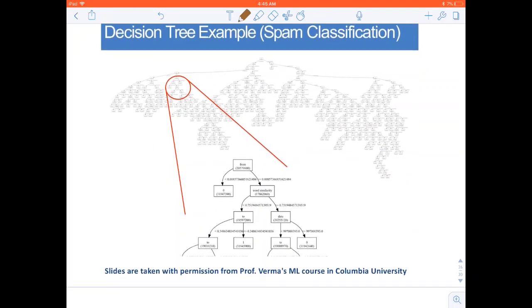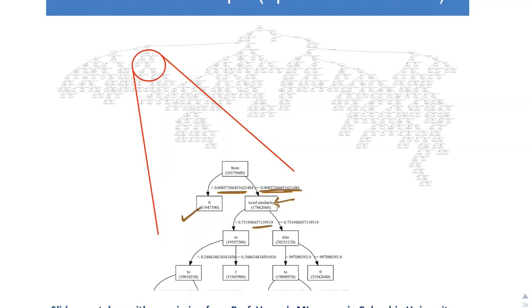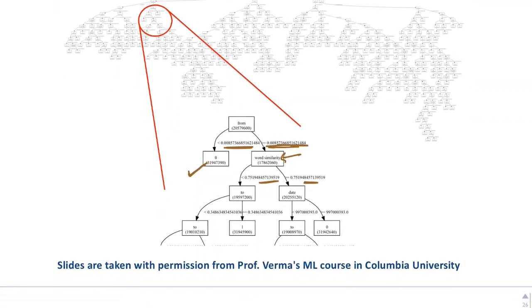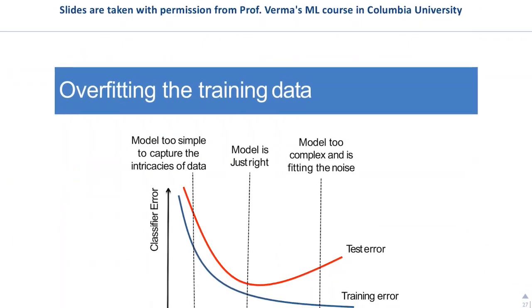Decision tree example for spam classification. Again, like feature and then deciding the value of threshold for that feature and dividing. Here, we have all of them labeled as spam so we don't need to divide it further. Here, we pick up another feature and decide on another threshold and keep dividing it.